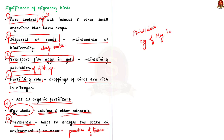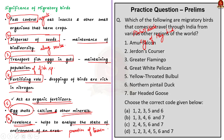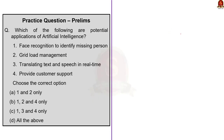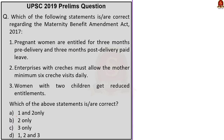Now moving on to the practice prelims question discussion. We have five questions today. First question: Which of the following are potential applications of artificial intelligence — face recognition to identify missing persons, grid load management, translating text and speech in real time, provide customer support? All these are applications of AI, so the correct answer is option D, all the above.